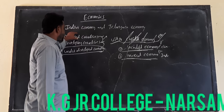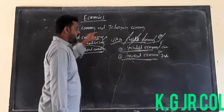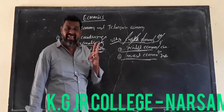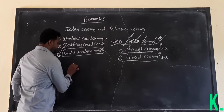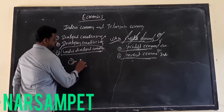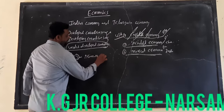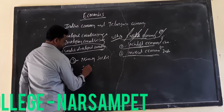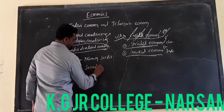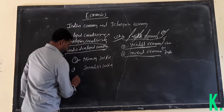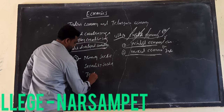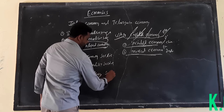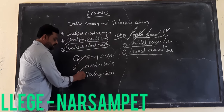Now the developed countries and developing countries — whether Capitalist, Socialist, or Mixed Economy — any economy is divided into three sectors. There are three sectors: Primary sector, Secondary sector, and Third sector.